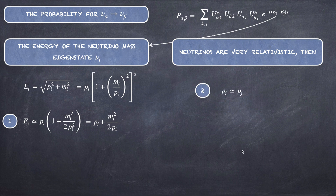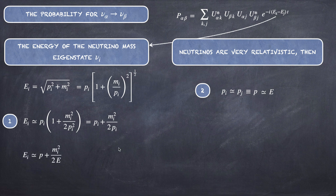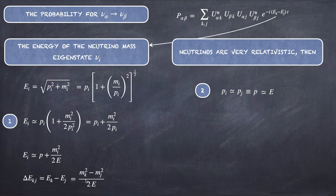A second approximation: the momentum of eigenstate ν_i is approximately equal to that of ν_J, and we call this average momentum P, which approximately equals the energy E. So E_i ≈ P + m_i²/(2E). The difference ΔE = E_K − E_J then becomes (m_K² − m_J²)/(2E), which we call Δm²_KJ.